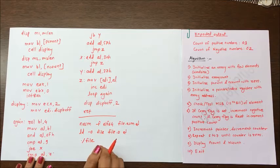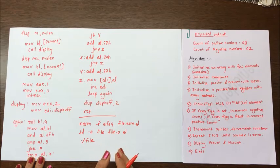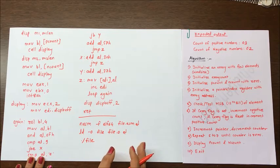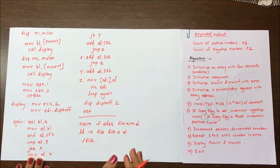And last instruction is dot slash filename. In this way, we have studied the program to find out positive numbers and negative numbers count from the given array.